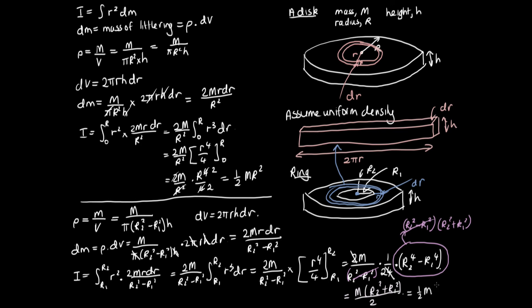So the moment of inertia of a ring is one-half M(r1² + r2²). It may seem surprising that r1² and r2² are summed rather than subtracted, since we subtracted them to get the volume. But physically, the moment of inertia should be larger when more mass is concentrated further out. By creating a ring — moving mass further from the center — we expect a larger moment of inertia, so it makes sense that these terms are summed in the final expression.